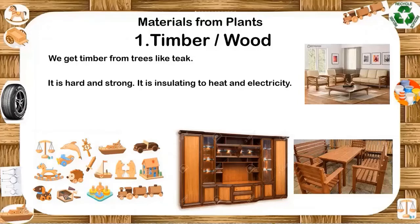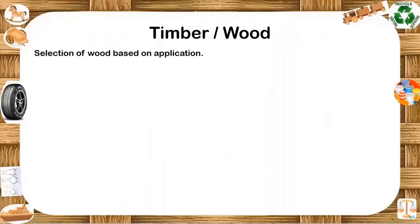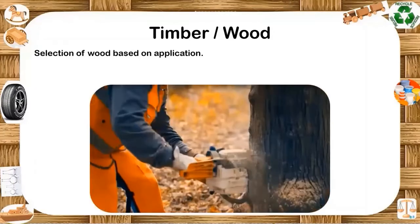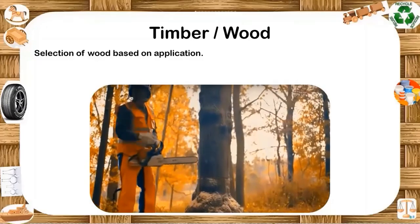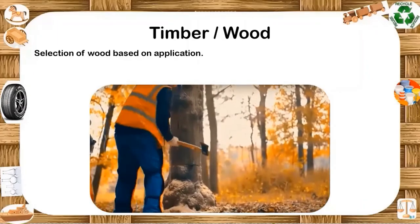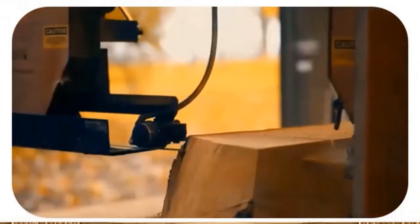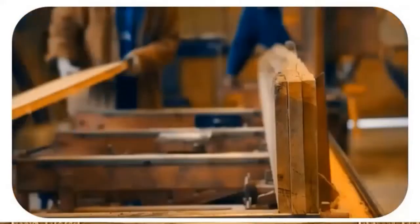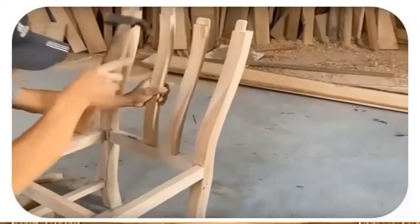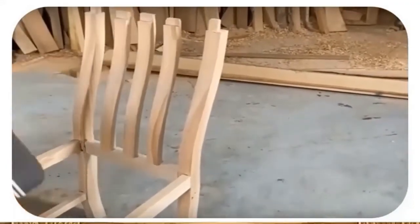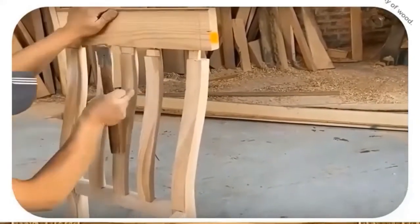Secondary products from wood include furniture, building structures, component containers and musical instruments, artwork, sports equipment like cricket, hockey, billiard, table tennis, etc. Toys and sports equipment have long made use of wood for handles and main parts. The first step in furniture making is the selection of wood based on application. The tree is cut into pieces called lumber. The lumber is dried to reduce moisture. The dried wood is moved to the machine shop where different parts of the furniture are cut out and clamped together. Oil and paint bring out the beauty of wood.